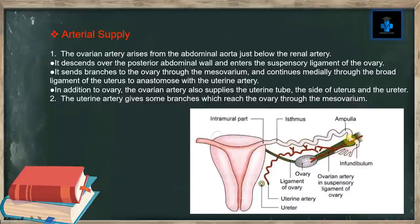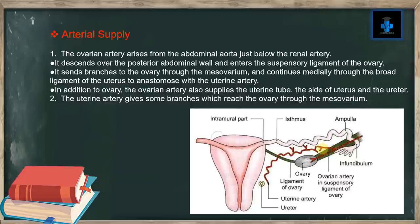Arterial supply: the ovarian artery arises from the abdominal aorta just below the renal artery. It descends over the posterior abdominal wall and enters the suspensory ligament of the ovary. It sends branches to the ovary through the mesovarium and continues medially through the broad ligament to anastomose with the uterine artery. In addition to the ovary, the ovarian artery also supplies the uterine tube, the side of the uterus, and the ureter. The uterine artery gives some branches which reach the ovary through the mesovarium.